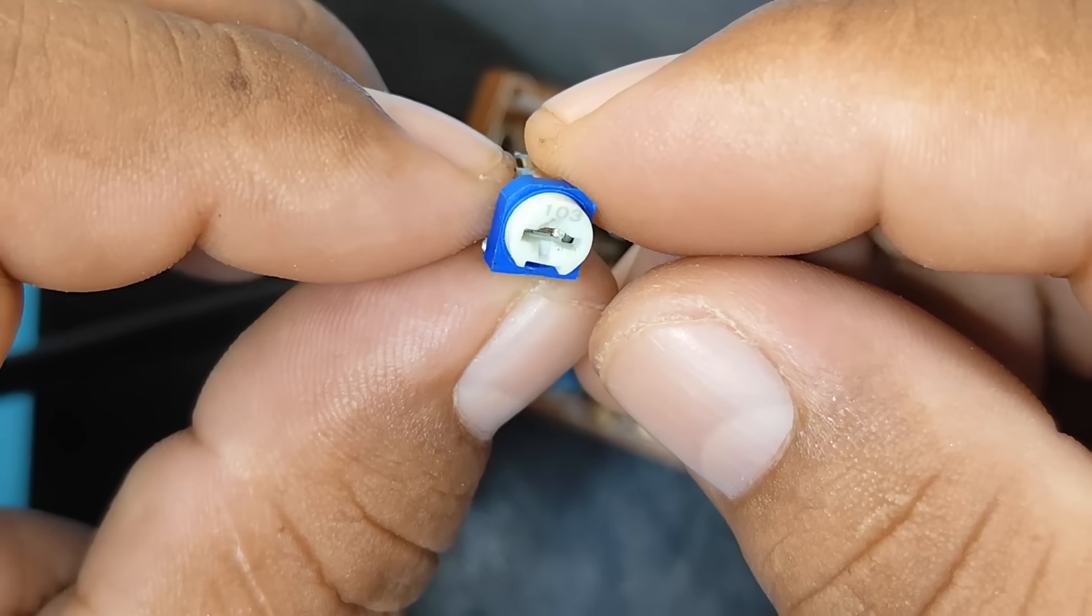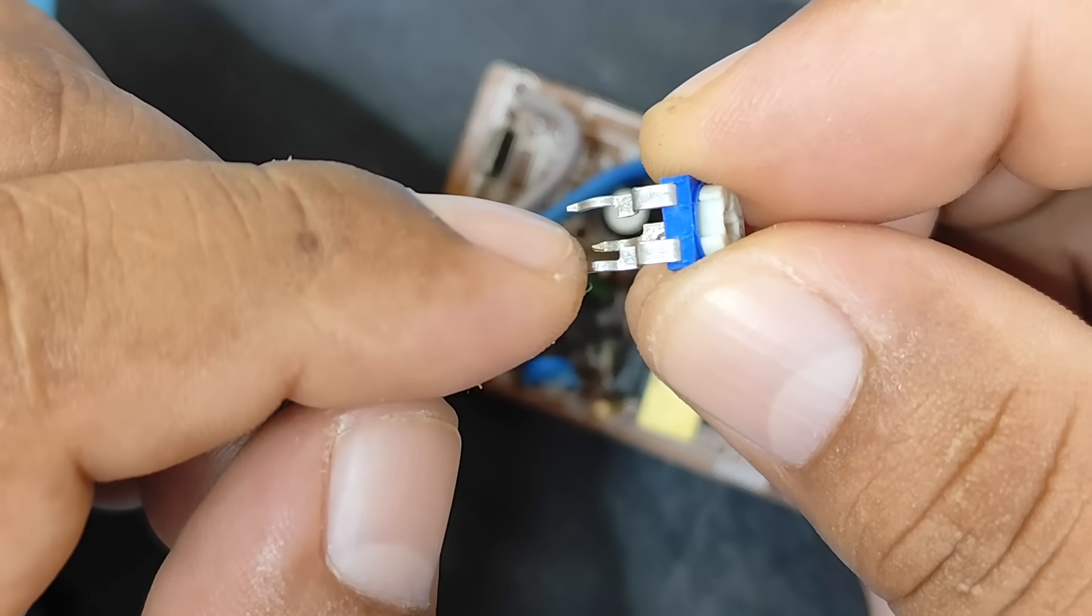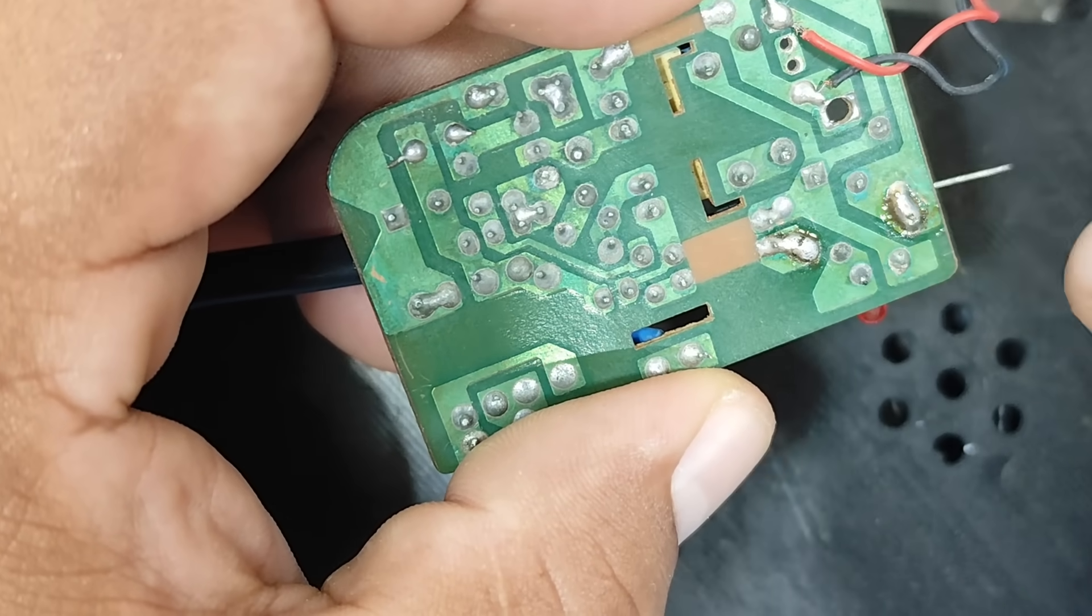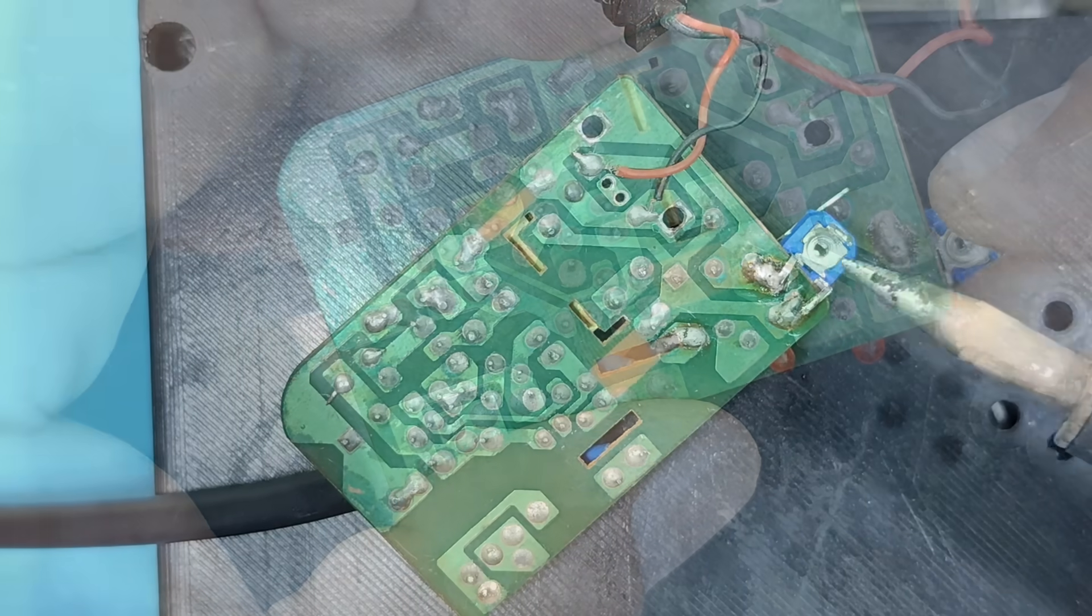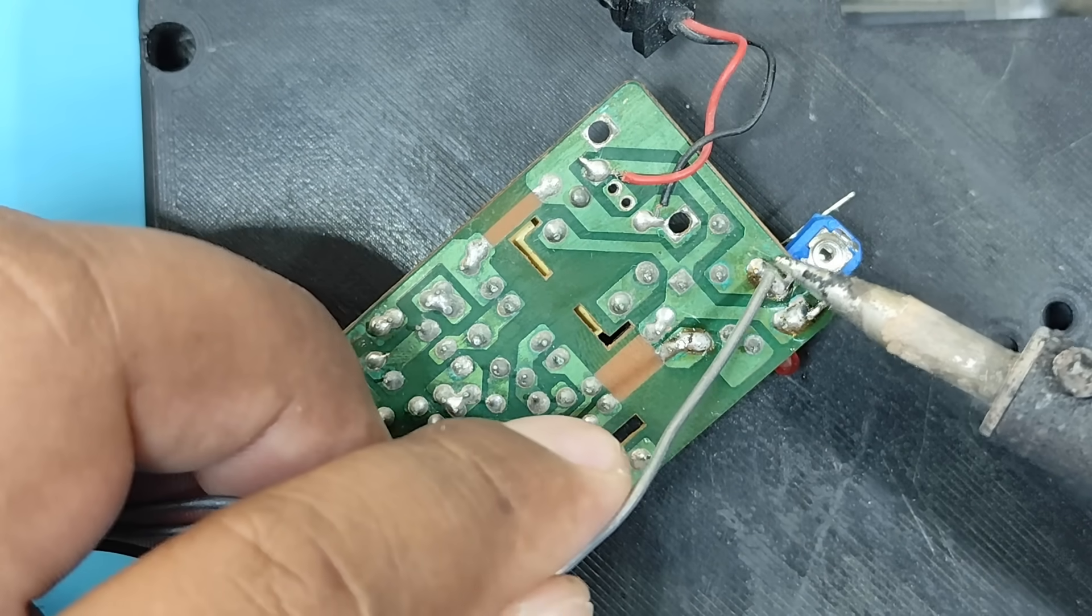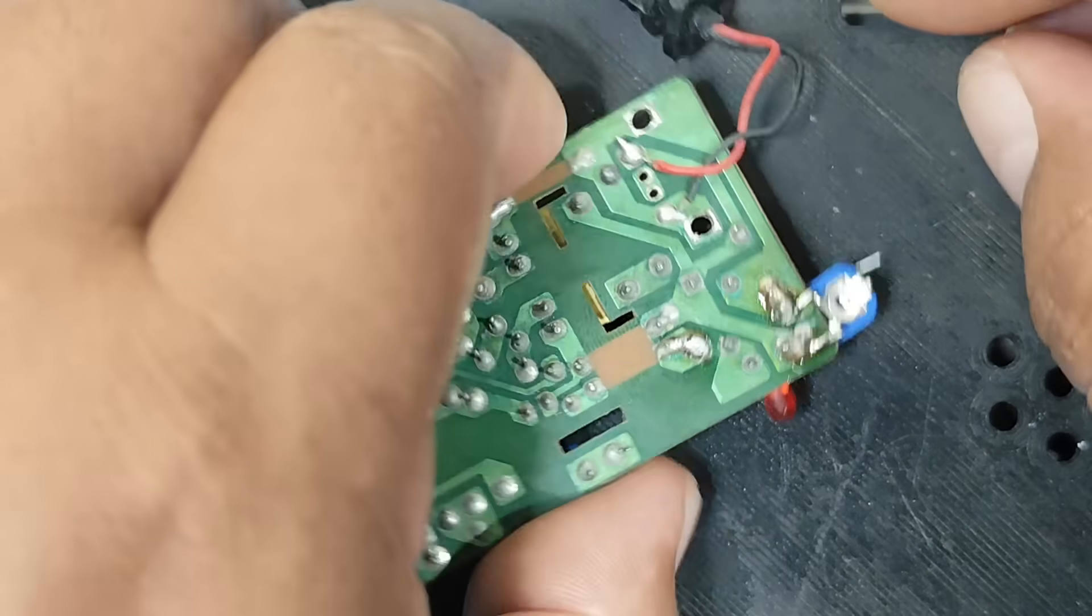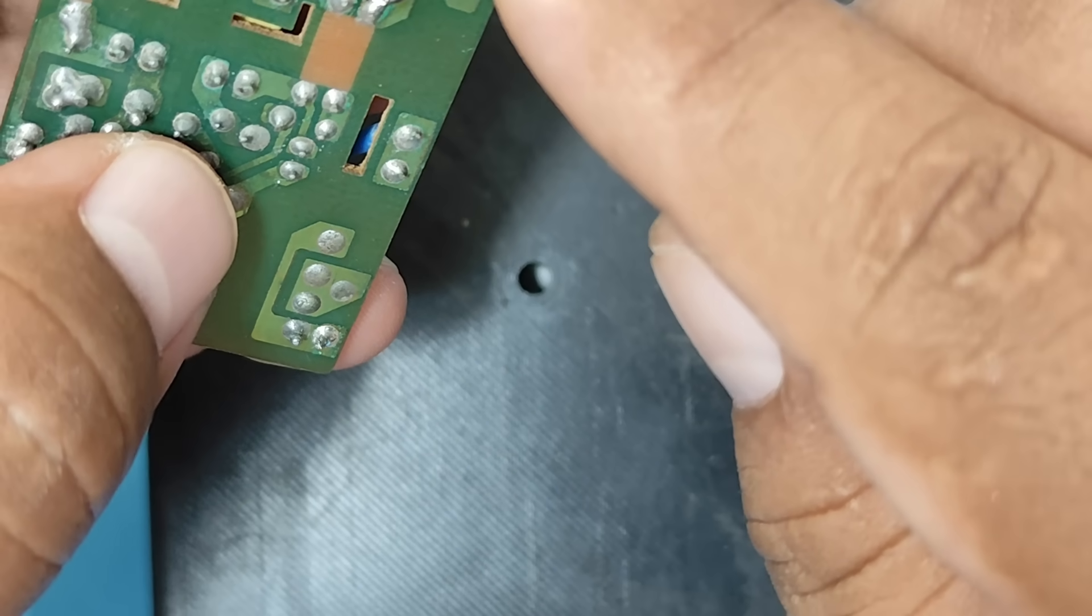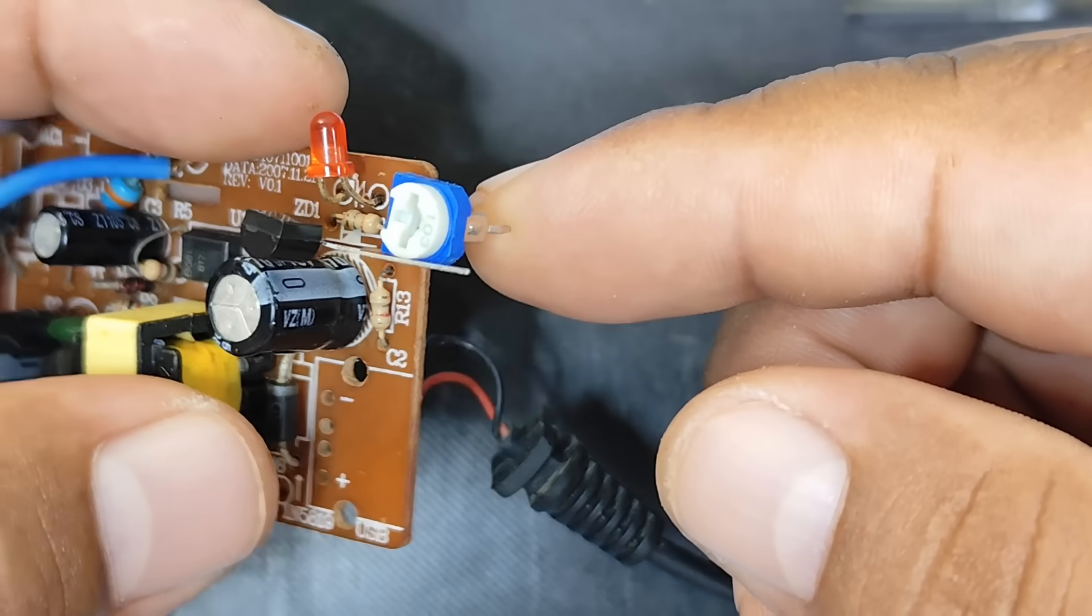Ok, now we'll solder the trimmer. Either end can be positive or negative. This pin is negative, and this one is positive.